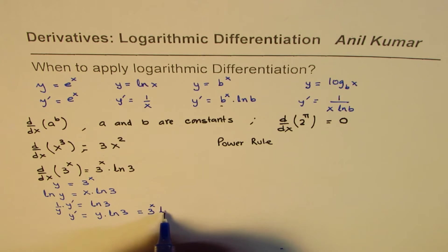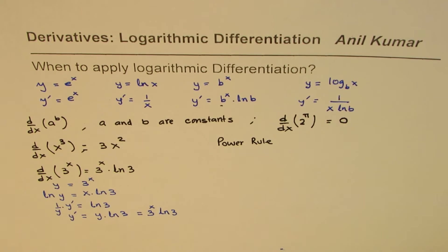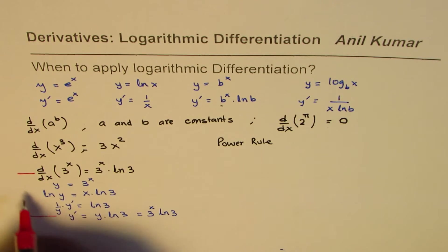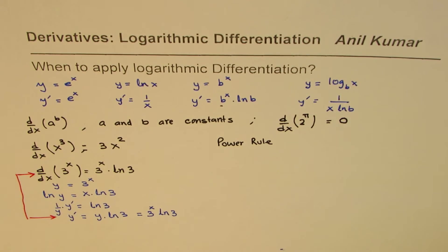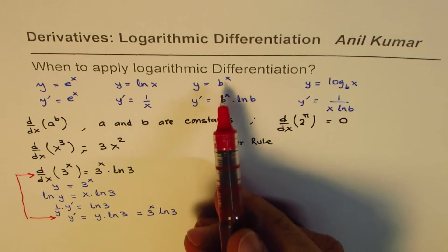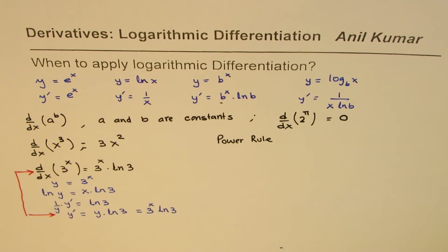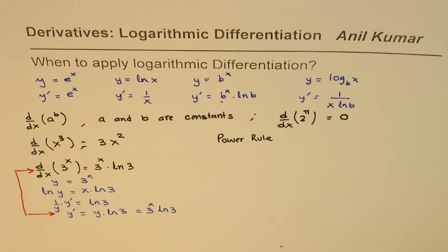Since y is 3 to the power of x, we get the derivative as 3 to the power of x times ln 3. As you can see, the result is the same. So this formula for the derivative is actually derived in exactly that fashion — these are the steps to get the formula.